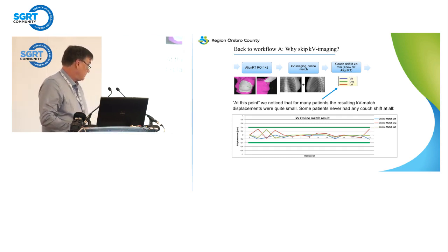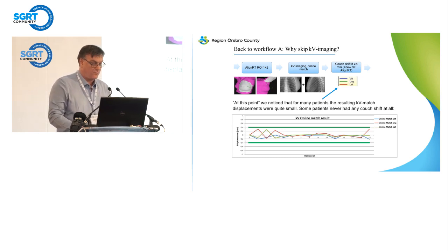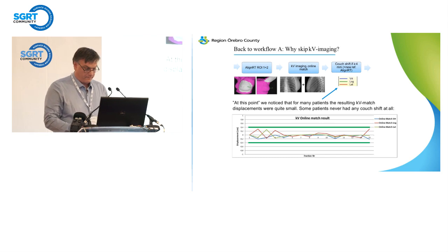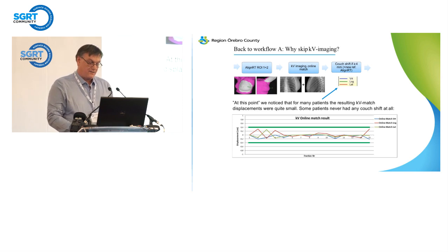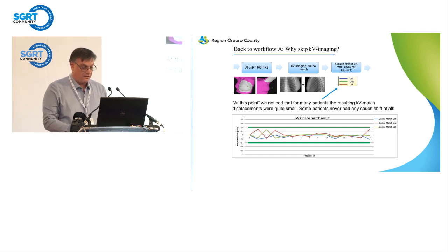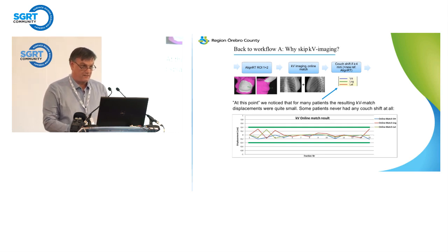Going back to workflow A, where we had both AlignRT and KV imaging: we first did the AlignRT setup, then the KV imaging, and if the patient had a couch shift of more than 4mm, we applied it. We noticed that in many cases the patient actually never got any couch shift. At many fractions, the match results were on the order of 2mm or less, so according to our workflow, we never did any couch shifts. So it raises the question: if we take KV images at each fraction but never do the couch shift, why are we doing KV imaging?